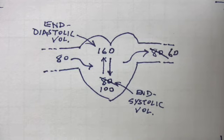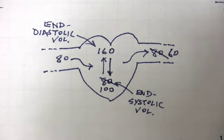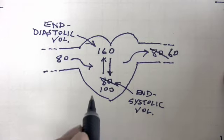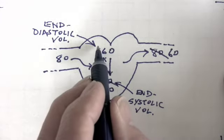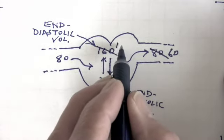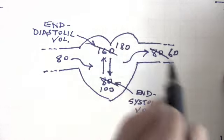Now, assuming the same volume of blood is entering the heart, that is the 80, now what would the end diastolic volume be? Well, you add 20 more to it, so instead of 160, the end diastolic volume is now 180.